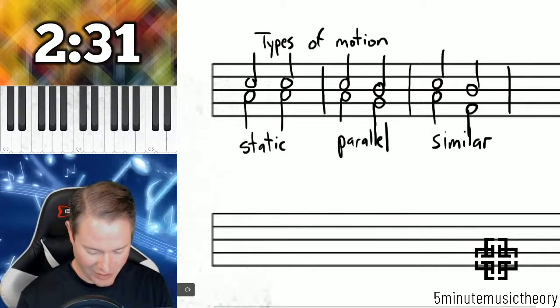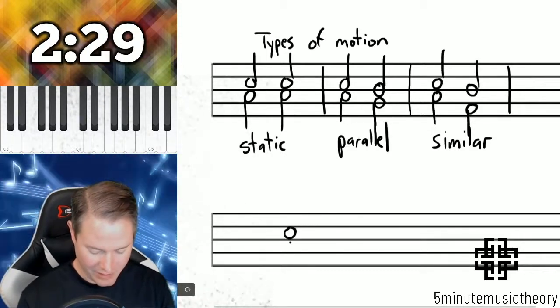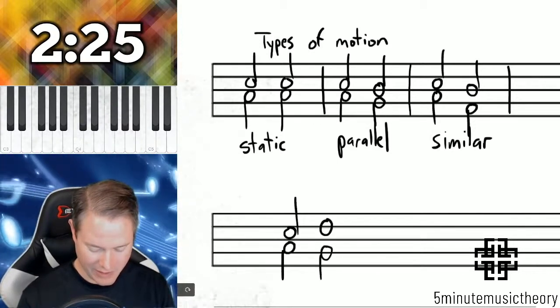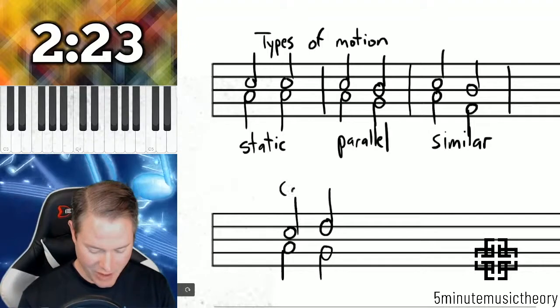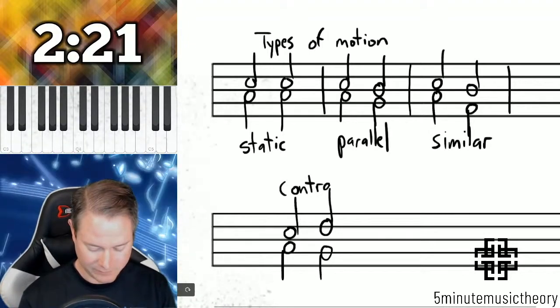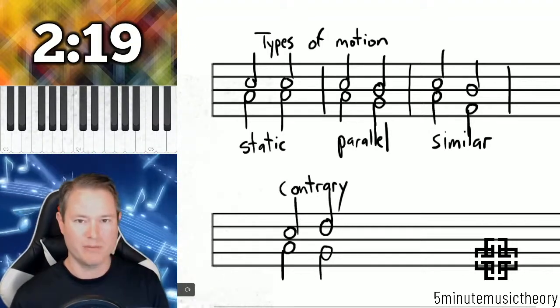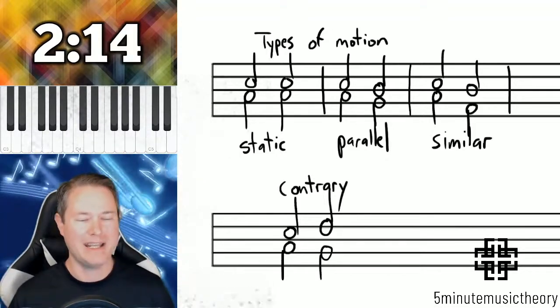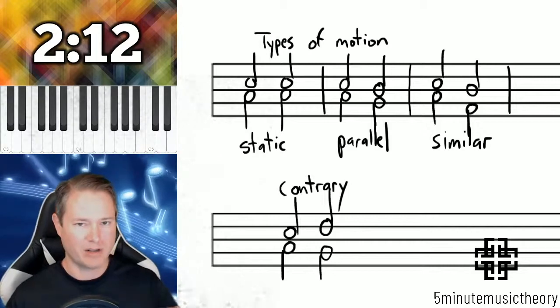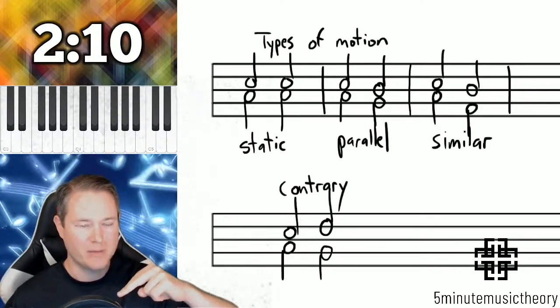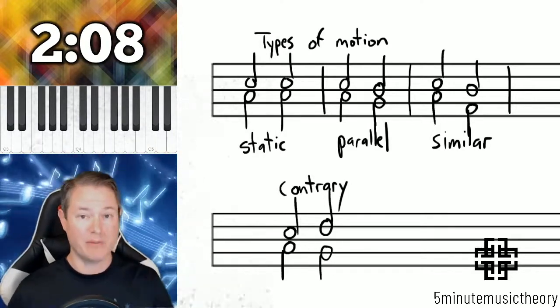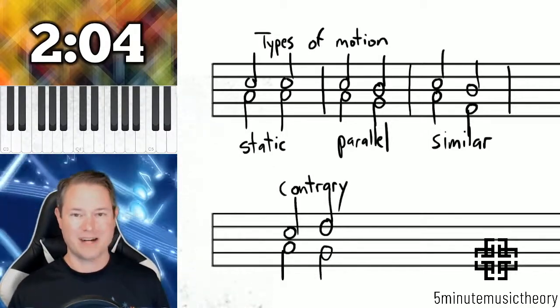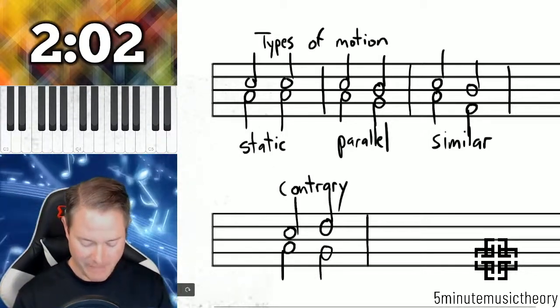And then I'm going to go down to the lower staves here to show the last two, and I'll use the same two starting pitches. This is contrary motion. Contrary motion moves contrary to each other, so one's moving up and one is moving down. And by the way, any of these can be in any direction. Like parallel motion can be up or down, similar can be up or down, contrary can be moving away from each other or moving towards each other, just as long as they're actually contrary to each other.